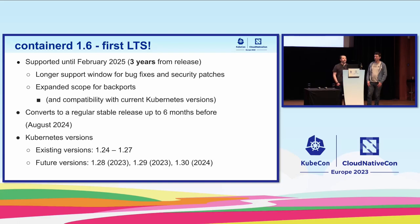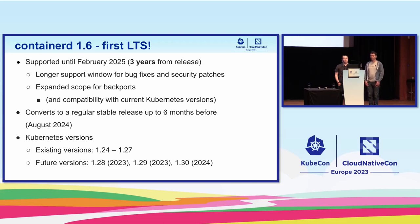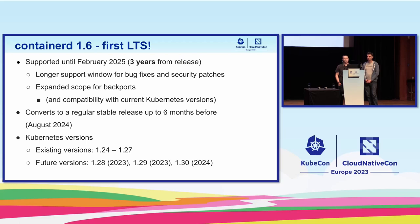Our first LTS release is 1.6, which is going to be supported until February of 2025 — three years from the date it was released. In its longer support window, it's going to have bug fixes, security patches, and we're aiming to support Kubernetes releases during that three-year window, including implementing new capabilities. It'll convert into a regular stable release up to six months before — so that would be August 2024 — and will have its normal backport scope at that point: bug fixes and security patches, but not new functionality.